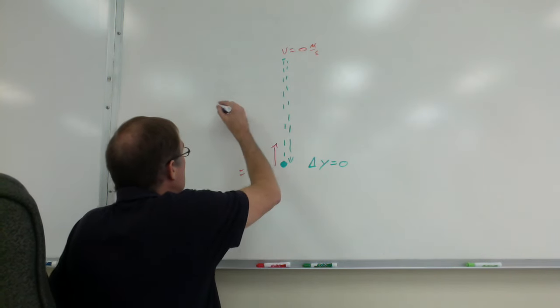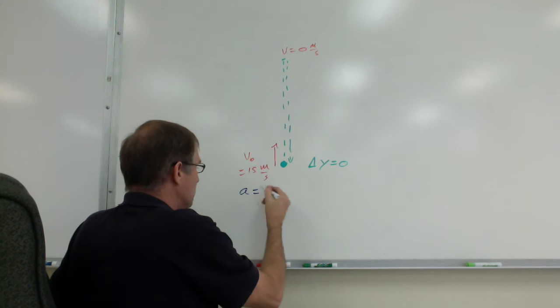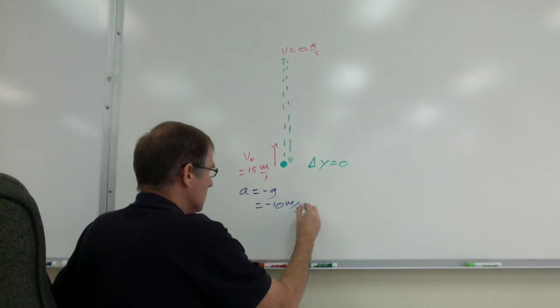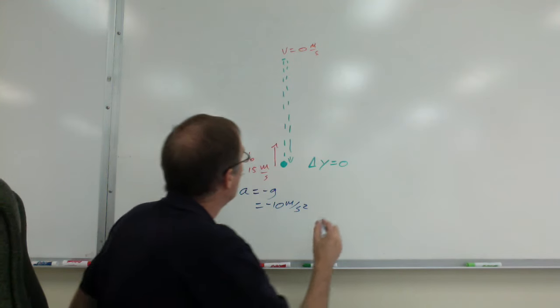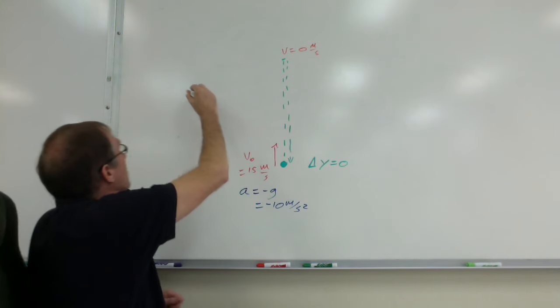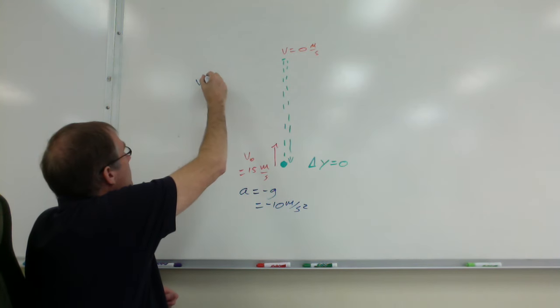So for all these questions, use an acceleration of negative g, negative 10. To find the time, where should I do this? Can you still see? Yeah. So to find the time, I'm going to use v equals at plus v sub zero, and that zero,